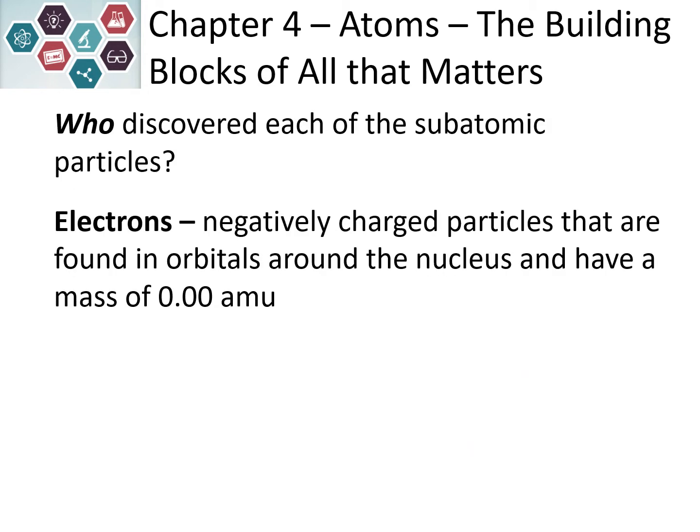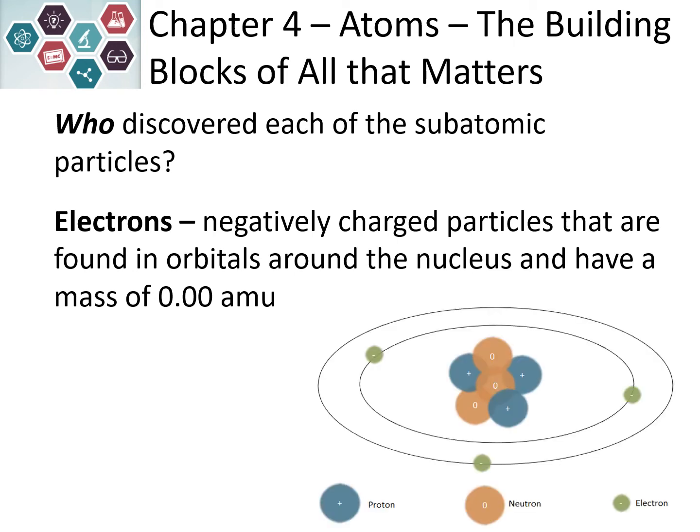Electrons are negatively charged particles found in the orbitals — in the empty space that surrounds the nucleus. They have essentially no mass. They're represented by the green spheres orbiting our nucleus.